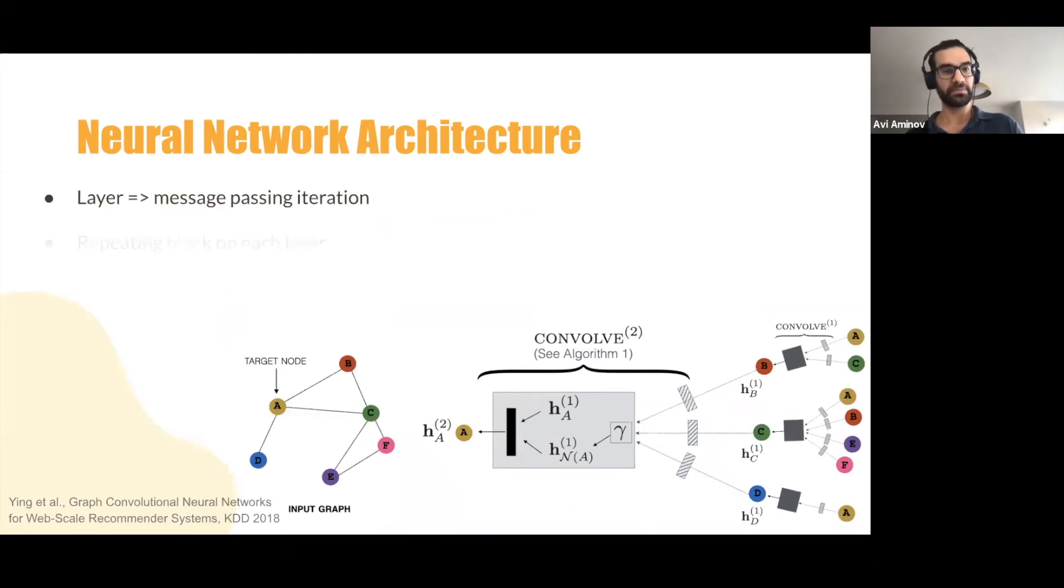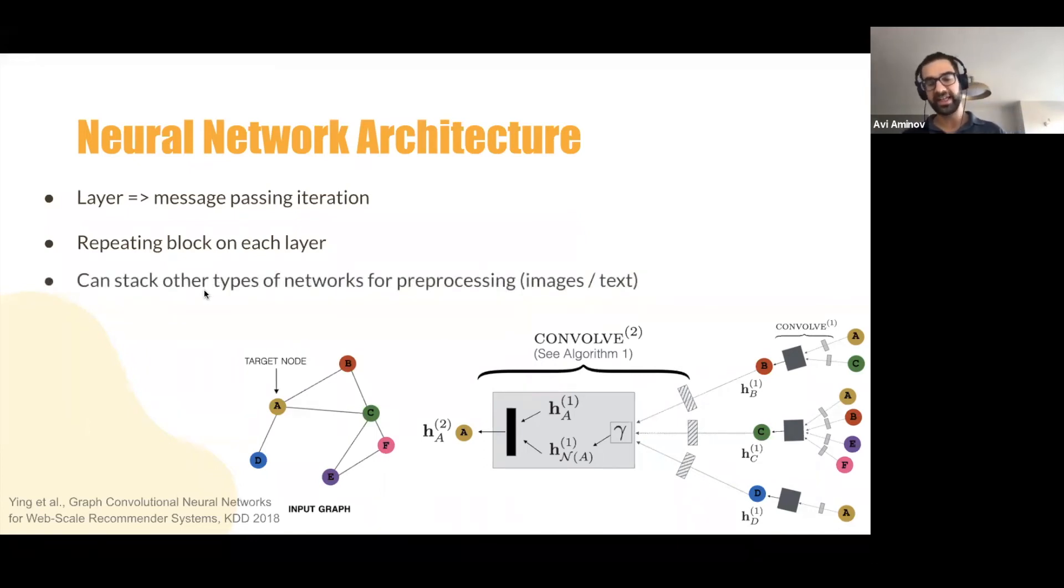So as I said, a layer in the neural networks corresponds to a message passing iteration. So for example, if the network is two layers deep, then each node would be affected by nodes that are two hops apart from it, including itself, if it is connected to itself. And this is called the receptive field of the network. And it's very important to take this into consideration. The same way that for those of you who know, for example, vision, it is important to take into consideration the receptive field of a vision network. And we have repeating blocks on each layer. And we can also stack, and again, we use the differentiable learning here. We can take other types of networks for pre-processing.